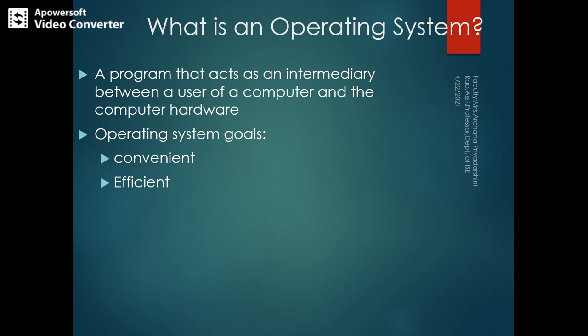The operating system performs basic tasks like recognizing input from the keyboard, keeping track of files and directories from the disk, and sending output to the display screen. The basic goals of operating system are that it should be convenient — meaning easy to use — and it should be efficient in terms of space as well as time. It must work fast and give results quickly while occupying a reasonable amount of space.